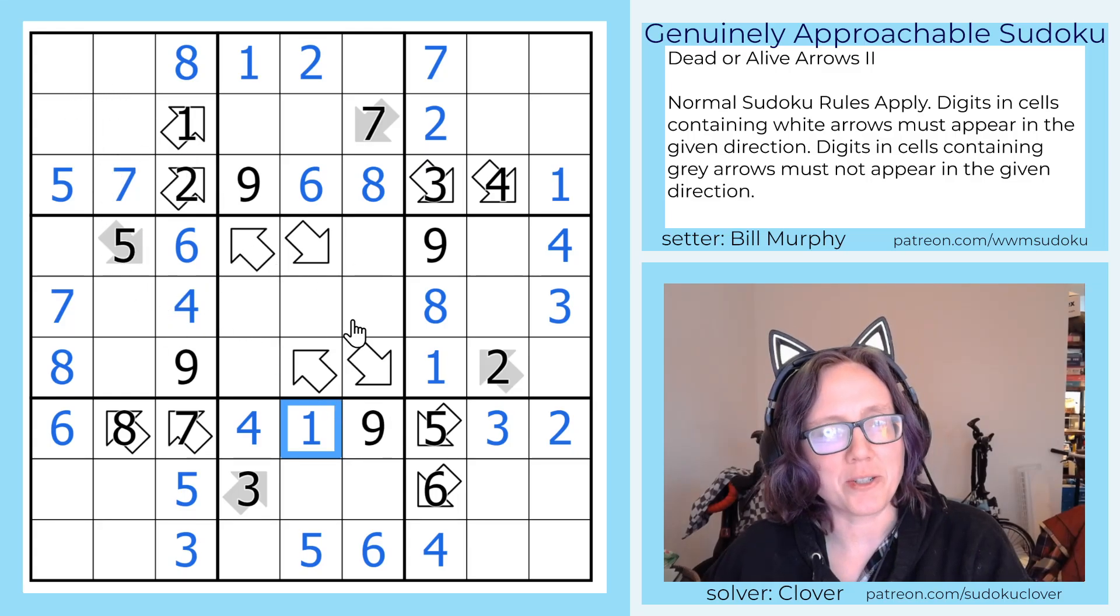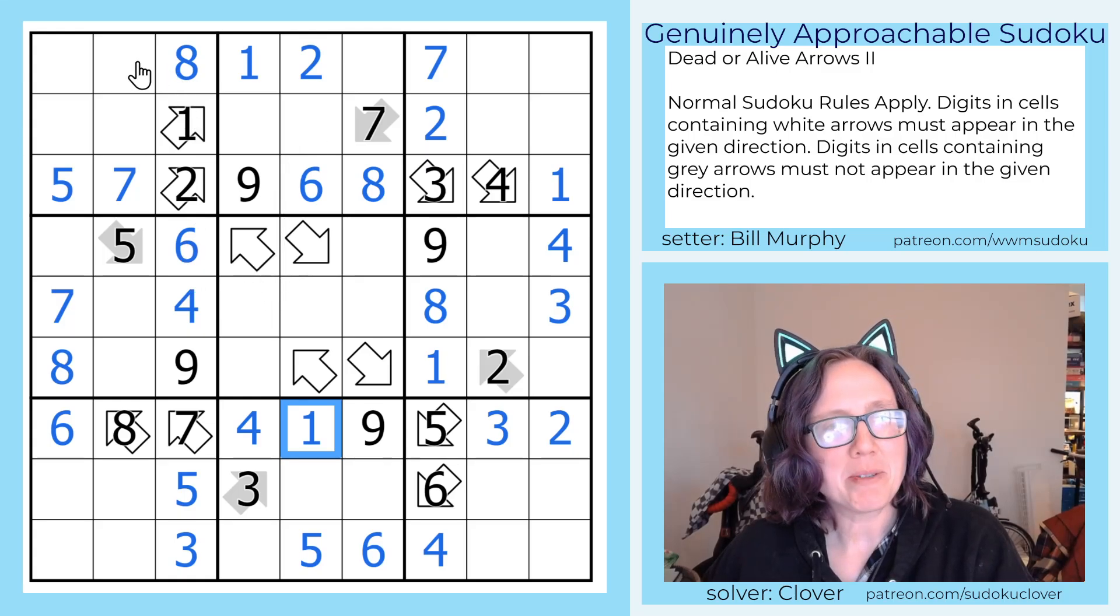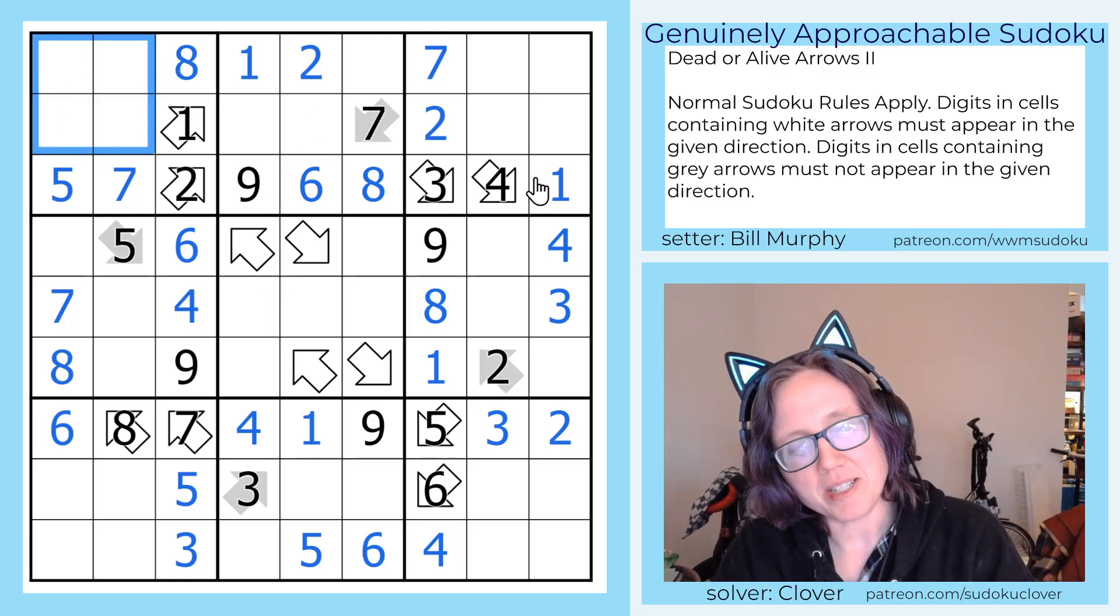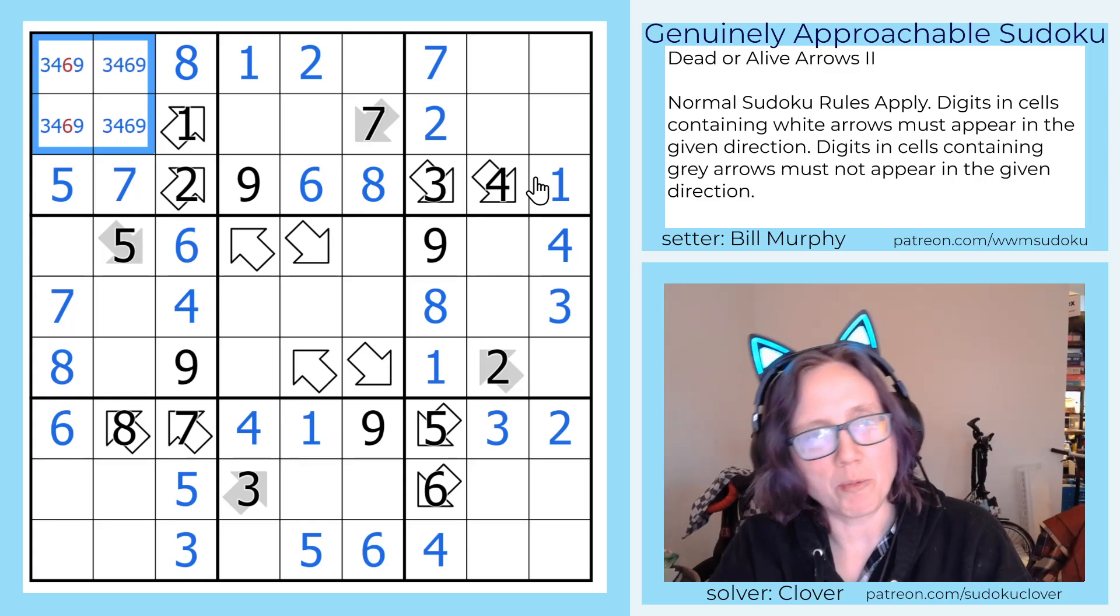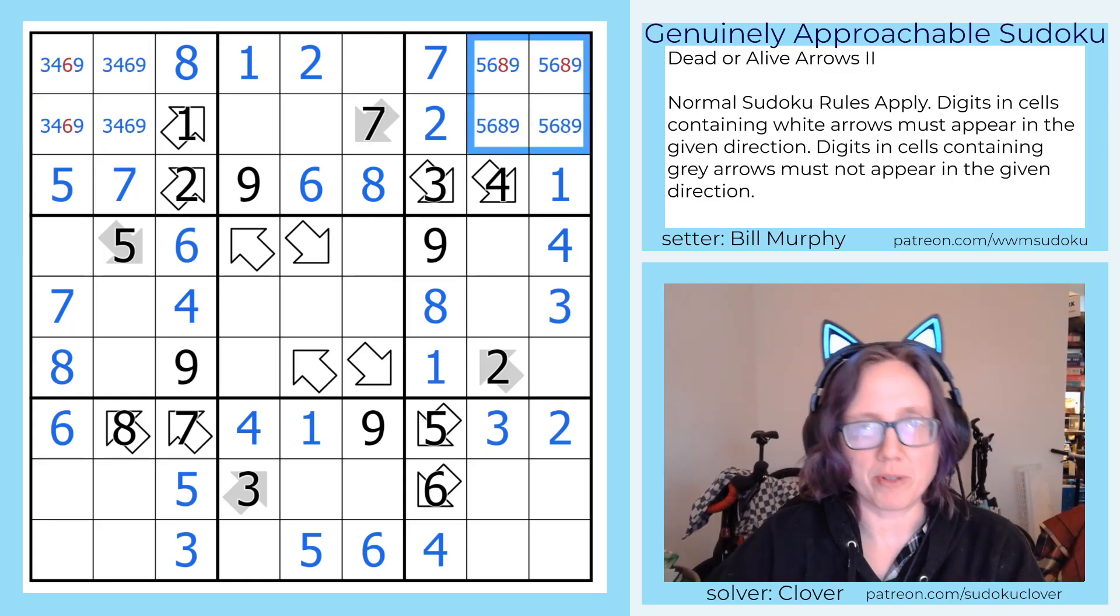And now I'm going to do something a little unusual because this is kind of the tricky part of the puzzle. This is where it gets a little bit spicy. I'm going to pencil mark these four digits just so you guys can see a little bit more clearly what is going on in these corner regions. And I'm going to do that for all of my corner regions.